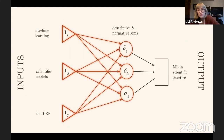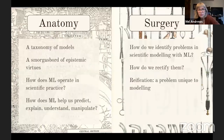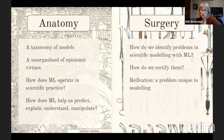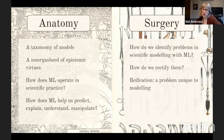On the descriptive side, there's a mapping project and an anatomy project we can get from the modeling literature. A taxonomy of models, a variety of epistemic virtues at play in different model outputs — hopefully this will allow us to answer: how does machine learning operate in scientific practice? And how does machine learning help us predict, explain, understand, and manipulate target systems in nature?